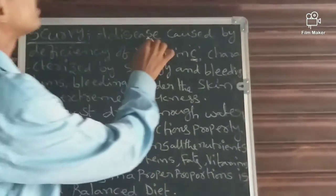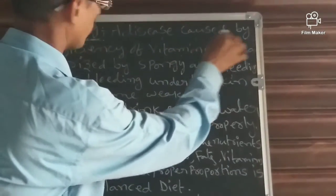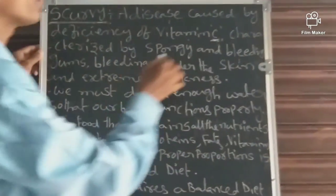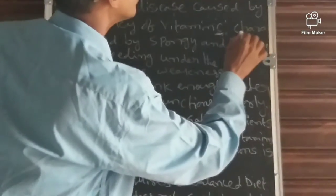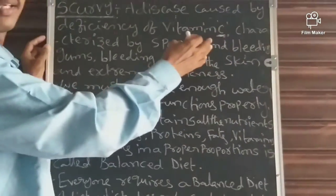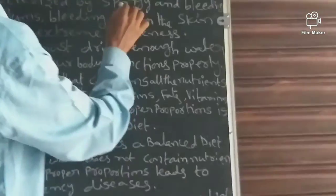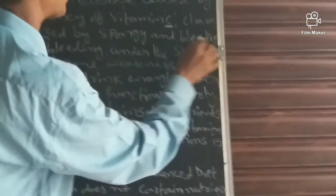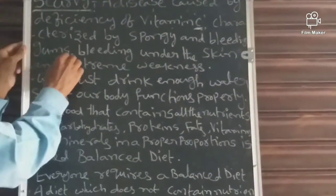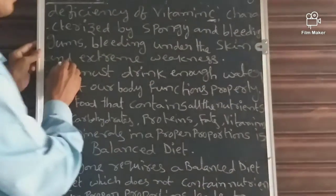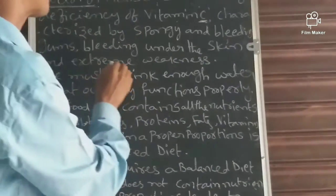A disease caused by deficiency of Vitamin C — the best example of a Vitamin C source is lemon — is characterized by bleeding gums, bleeding under the skin, and extreme weakness.